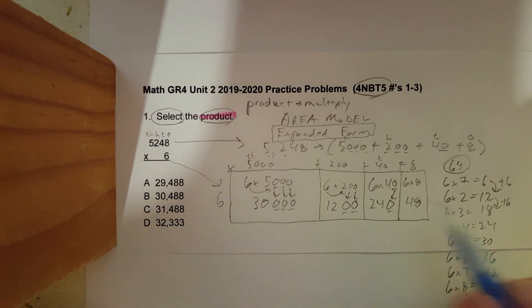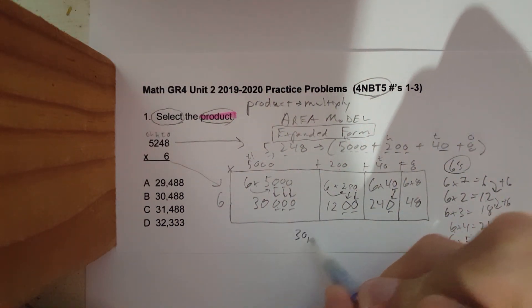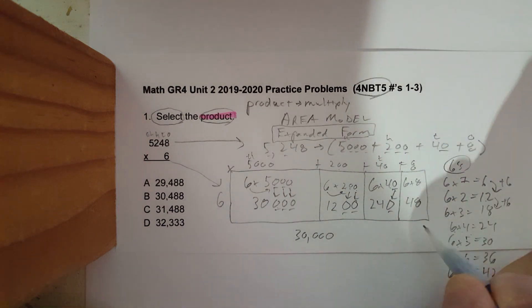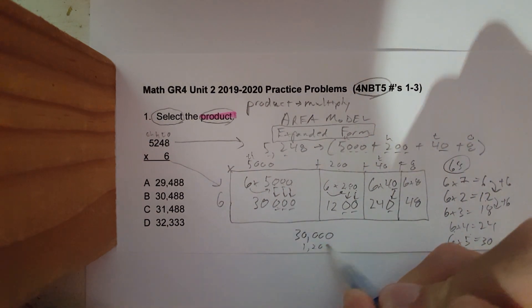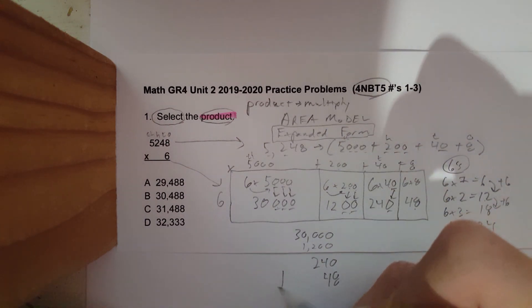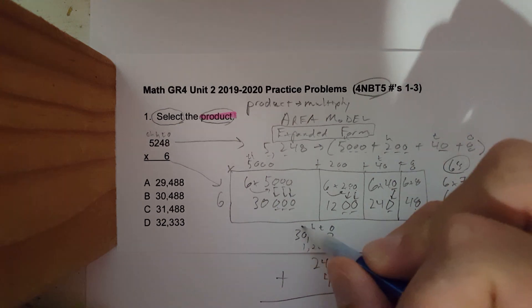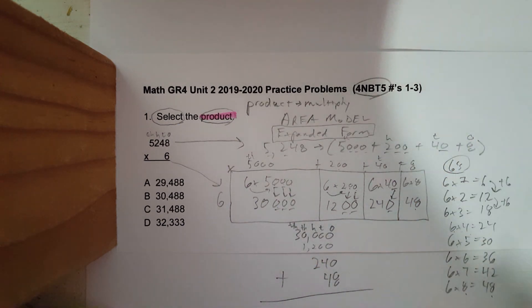Six times forty - six times four is twenty-four, one zero. And six times eight is forty-eight. Now let's add them. I'm going to take thirty thousand, which is this number, plus one thousand two hundred right here, plus two forty, and forty-eight.